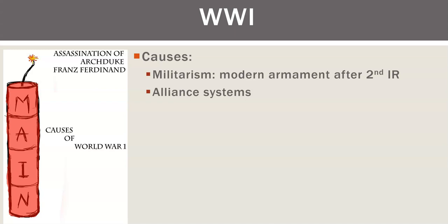The French ally with the Russians, which seems like strange bedfellows. The Germans, now surrounded, ally with the Austro-Hungarians and the Italians in a defensive alliance. The Austro-Hungarians, Italians, and Germans are called the Triple Alliance or the Central Powers. The French and Russians are the Entente Cordiale, and at some point Britain joins, making it the Triple Entente — against the Central Powers. These are defensive alliances Bismarck set up to keep Europe safe.